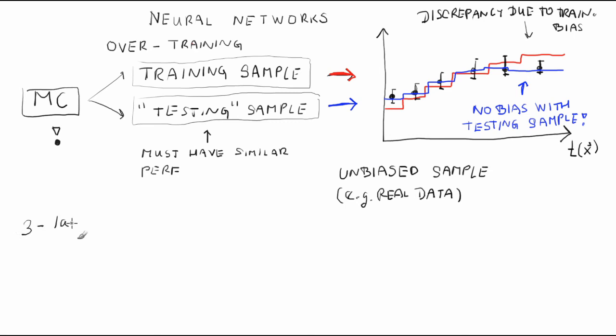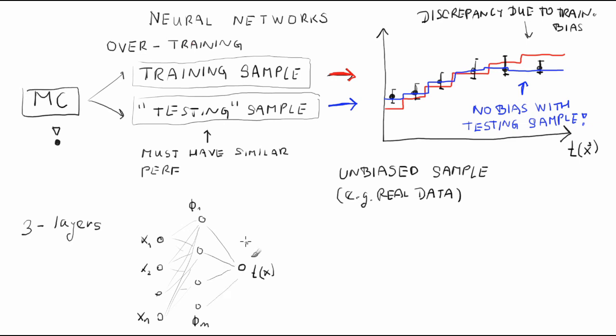We have been describing a neural network with three layers: the input variables, the transformed variables, and the resulting test statistic. In the diagrammatic language of the neural network community, this is a network with one hidden layer. In principle, one could insert more hidden layers, corresponding to a transformation of transformed variables, or transformation of transformed-transformed variables, and so on. The simplest multilayer perceptron with three layers has the mathematical potential to be sufficient, and whether insertion of additional hidden layers is beneficial is probably case-dependent.